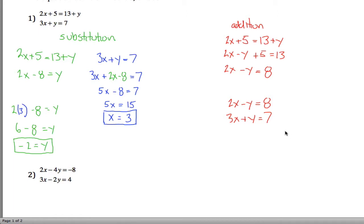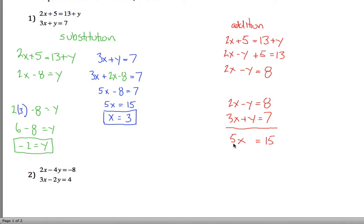Your second step is to see if you need to multiply either equation by anything so that when you add them up, something will cancel out. We got kind of lucky here — we don't have to multiply anything because negative y and positive y will go away. So we'll just add them up right now: 2x and 3x is 5x, negative y and positive y goes away, and 8 plus 7 is 15. So we have 5x equals 15, divide both sides by 5, and we get x equals 3.